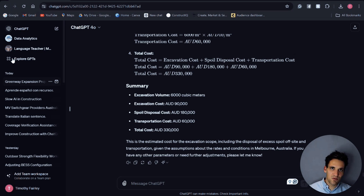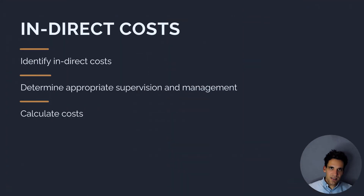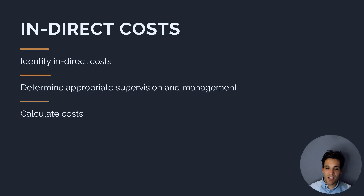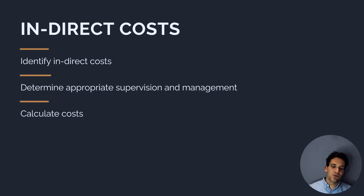In addition to calculating our direct costs — the costs of completing the physical construction works — we can also use ChatGPT to calculate our indirect costs, which are the costs of supervising and managing the works. We could use it to help determine appropriate supervision and management levels. For example, using the excavating example and looking at the project schedule, ChatGPT could help us determine how many project supervisors we need, and perform a range of functions to help us work out the costs of supervising and managing the works.